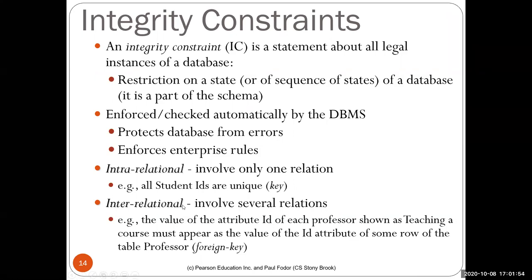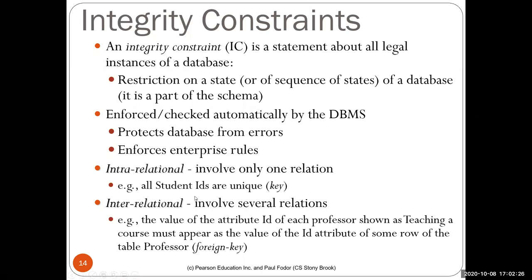Inter-relational constraints can be foreign keys or more complex assertions — for instance, that the number of students enrolled in a class equals the count of tuples in the enrollment table for that class in a given semester. All these constraints protect the database from errors and inconsistencies and enforce rules we know about the enterprise — like the number of seats in every class at a university.